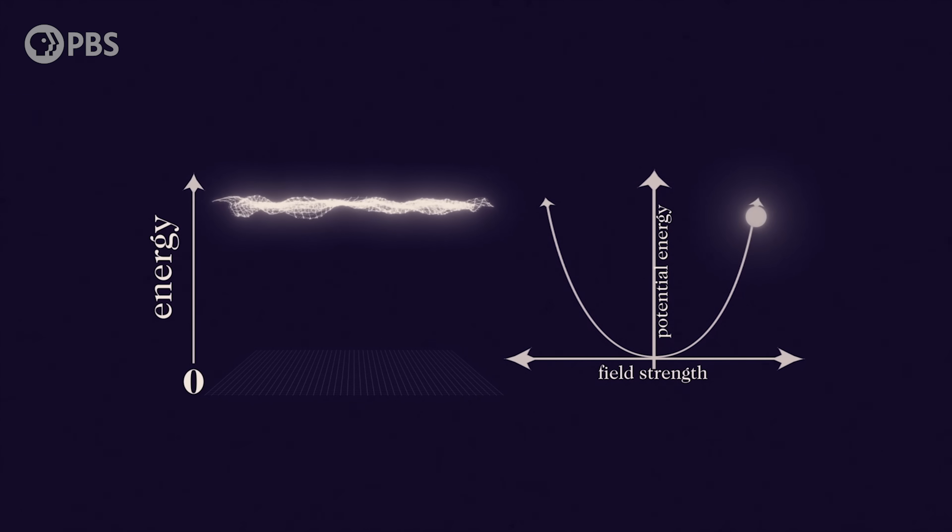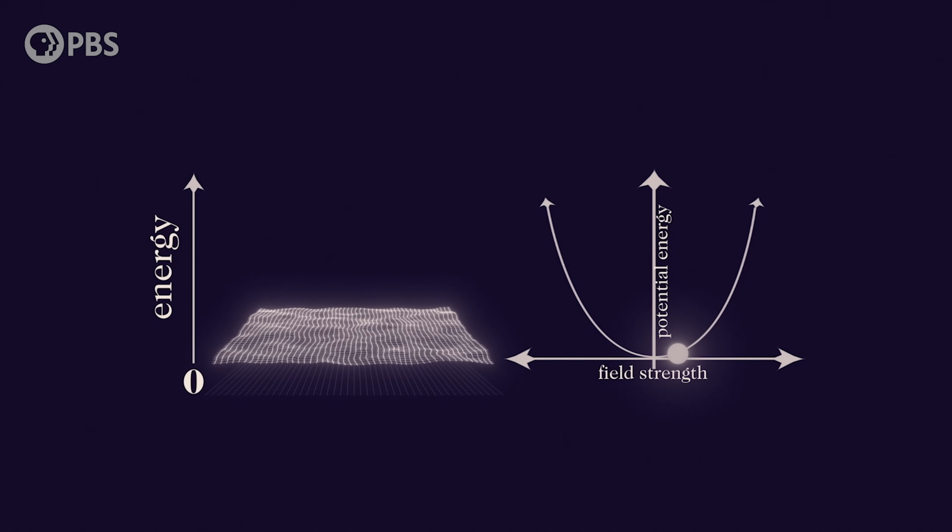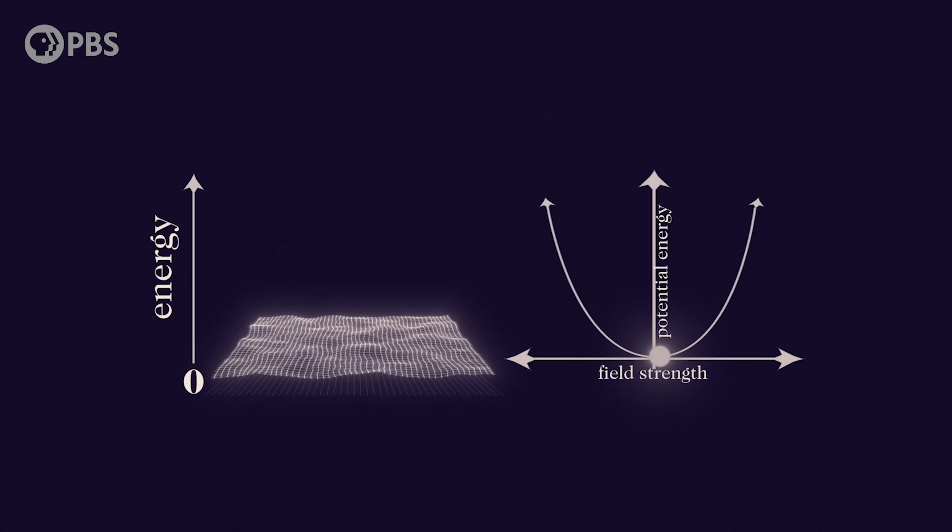Compared to quantum electrodynamics, which describes electromagnetism, QCD is complicated to say the least. For one thing, the vacuum in QCD is full of weird structure. You might ask how can a vacuum — aka nothing — have structure? In quantum field theories, the vacuum isn't really nothing. Vacuum is the word we use to describe the lowest energy state of a field, which is what you'll find when there are no particles around.